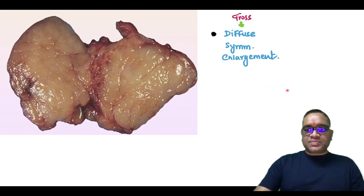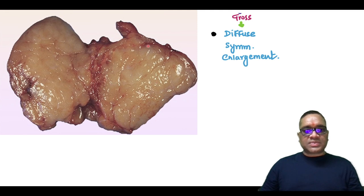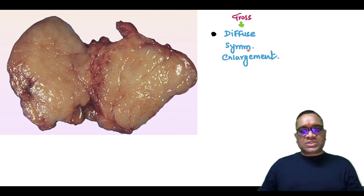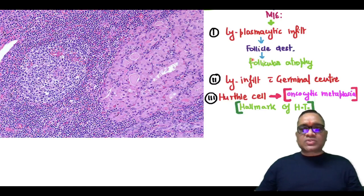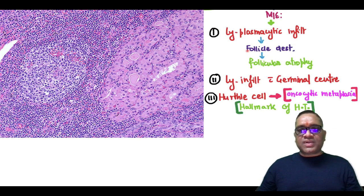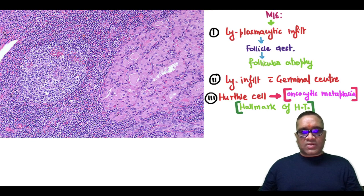In this patient, if you see the gross specimen examination, you can see diffuse symmetrical enlargement of the gland. Microscopy will show lymphoplasmacytic infiltrate which is destroying the follicle, and there will be follicle atrophy.